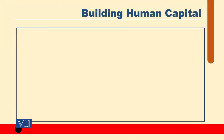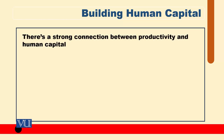The second important source of long-run living standards and productivity growth is building human capital. Human capital — through improving workers' skills, training, education, and health — can improve productivity.